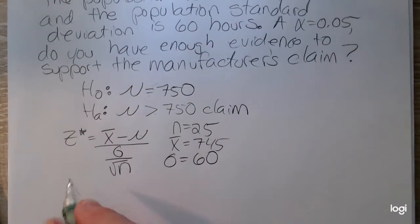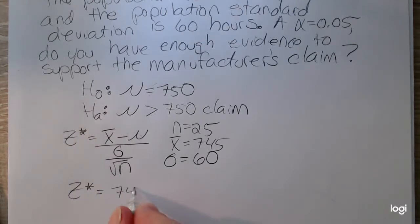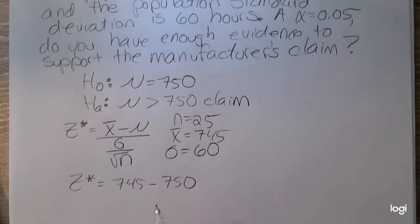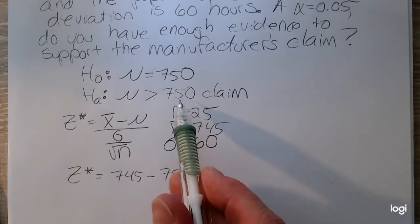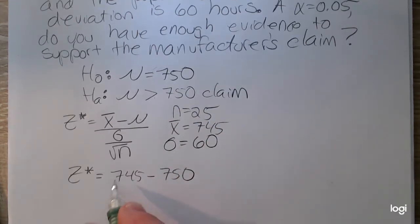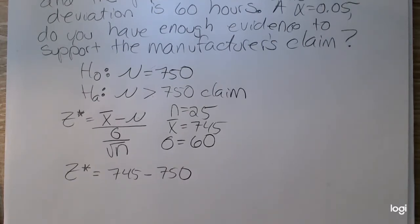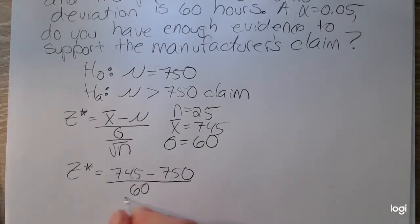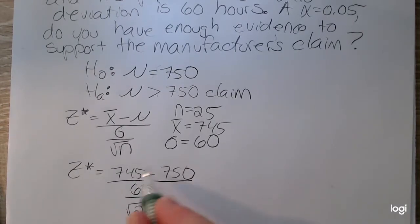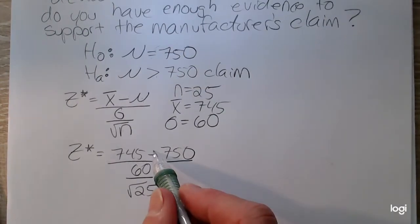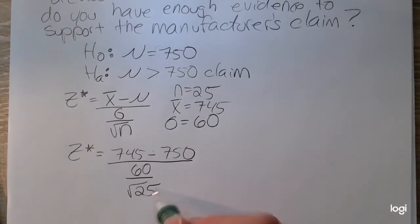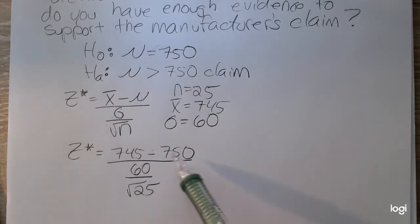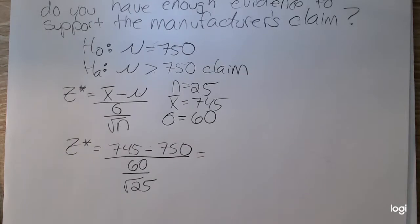Plugging into this standardized test statistic formula, it's 745 minus 750. That is the claimed value. In fact, the manufacturer is claiming it's more than 750. And even though these are different, this one is lower. Is this difference enough to warrant rejection of the claim? Or, sorry, rejection of the null? To do that, we need to standardize and compare it to a critical value. So I want to divide that by 60 over the square root of 25. I know this numerator is going to be negative 5. Negative over a positive, your denominator will always be positive, will yield a negative value. Because this observation is below the mean, I know I'm going to have a negative z-score.